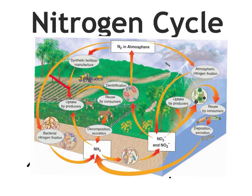Atmospheric nitrogen fixation requires a lot of energy. There are three bonds that hold nitrogen together. One thing that provides that amount of energy is lightning. So every time there's a thunder and lightning storm, some of the nitrogen in the atmosphere will be broken up, and it's actually taken down to the ground in the form of nitrates.